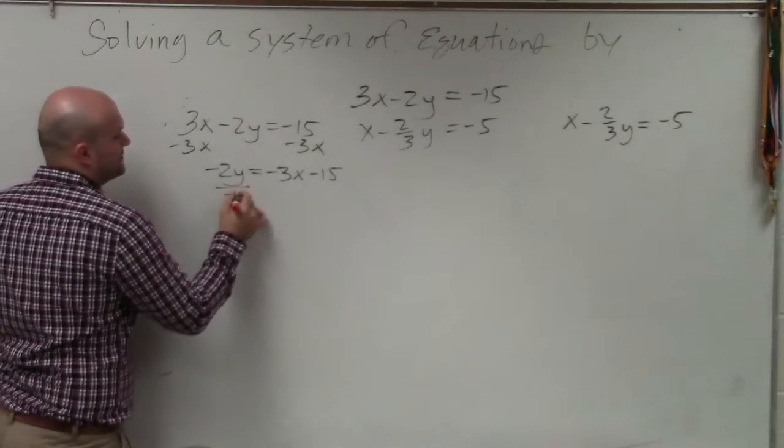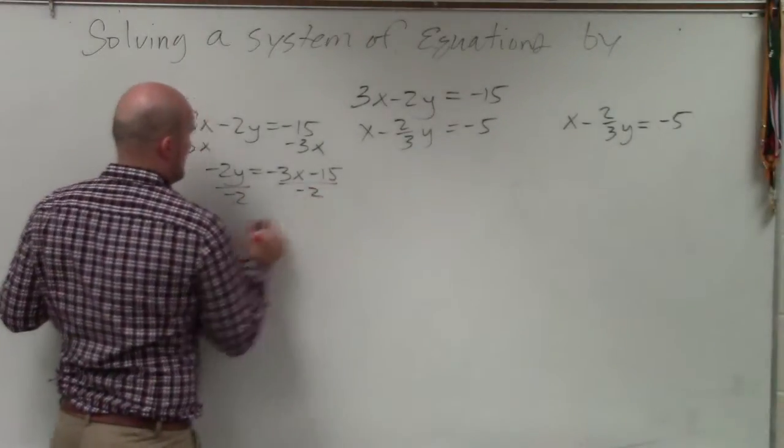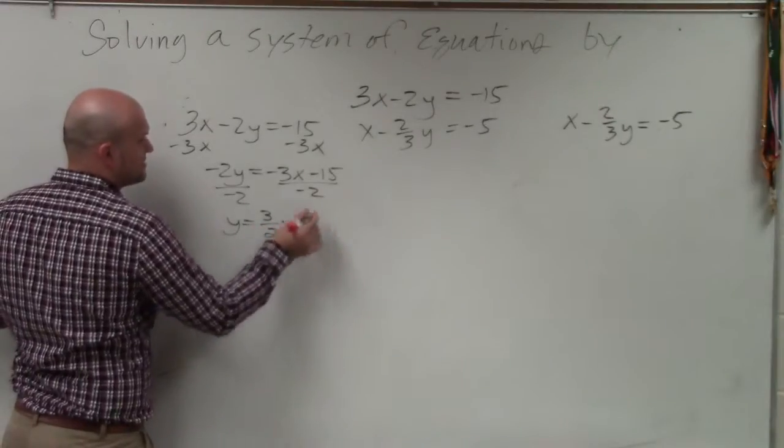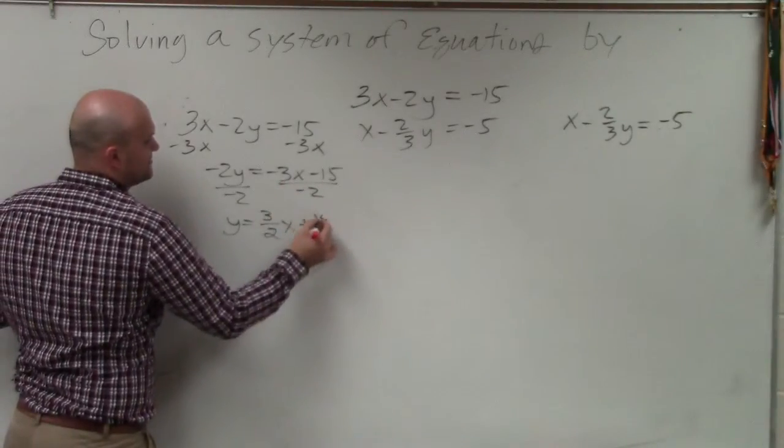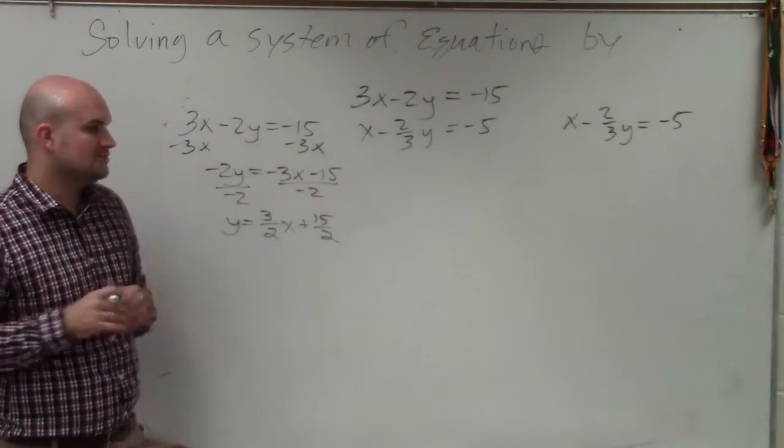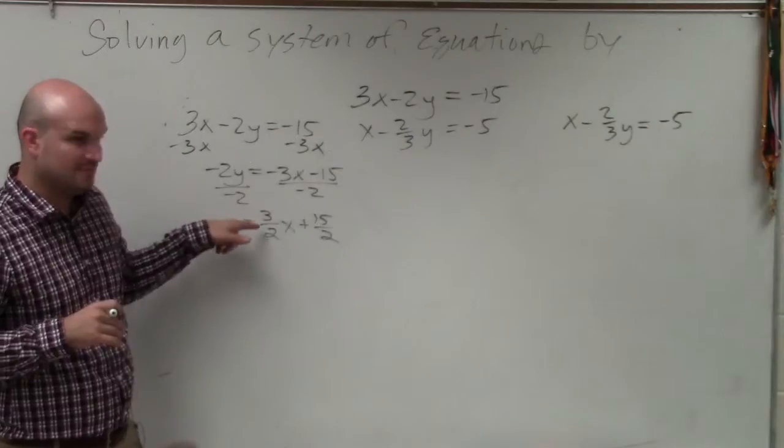Now I need to undo multiplying by negative 2, so I'll divide by negative 2. So I have y equals a positive 3 halves x plus 15 halves. Just leave it as a fraction. Just remember that 2 goes into both of those. Negative divided by negative becomes a positive.